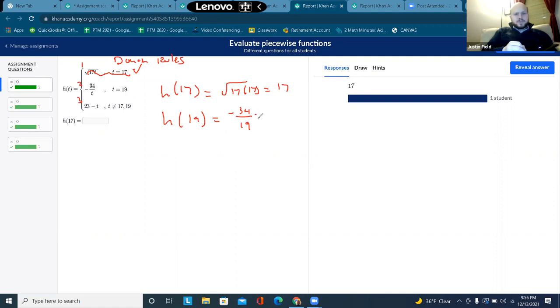So that's what it would equal if H was 19. And then if T is anything besides 17 and 19, then we use this function. So if it's 18, or if it's 16, or if it's 0, all of those are not 19 or 17, right? So then we're just going to use this function, 23 minus T. 23 minus 18 in that case, 23 minus 16 in that case, 23 minus 0 in that case.